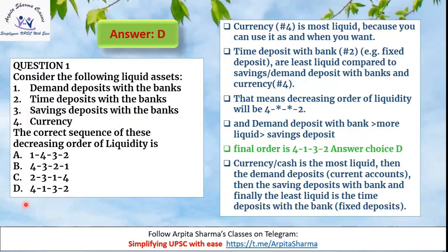With this logic, we derive answer D: first is 4 (currency) and last is 2 (time deposits). Between 1 and 3: demand deposits with banks — whenever we demand, we get our amount; and saving deposits with the bank. So the correct answer is 4-1-3-2.